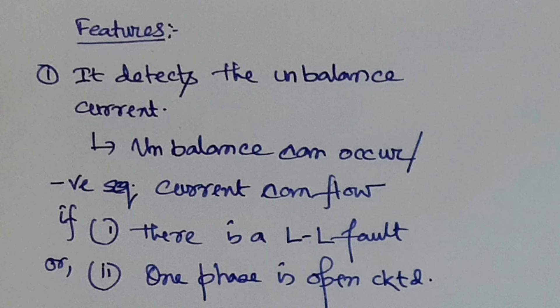The negative sequence relay has some key features. Number one: it detects unbalanced current. Negative sequence current can flow under two conditions — first, if there is a line-to-line fault, or second, if one phase is open circuit. It is important to remember that a zero sequence CT (ZCT or CBCT) cannot detect negative sequence current, even though it may sometimes be referred to as an unbalanced CT.